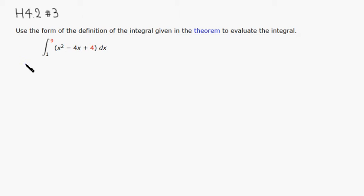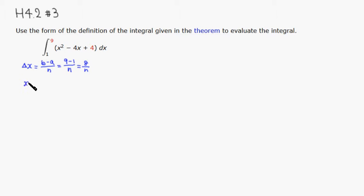The first thing we need to do is find delta x, which is (b - a) / n. Here b is 9 and a is 1, so that gives us 8/n. And xᵢ is going to be a plus i times delta x, so xᵢ = 1 + (8/n)i.